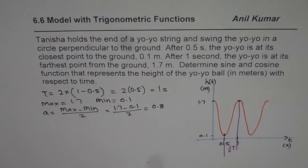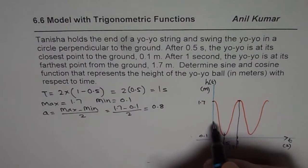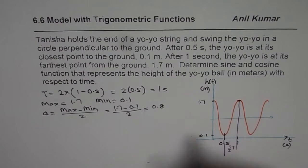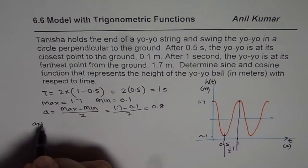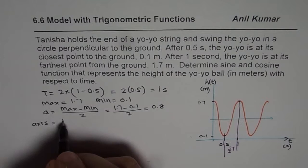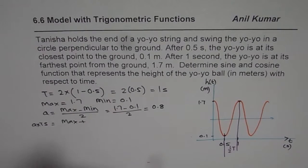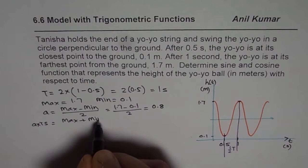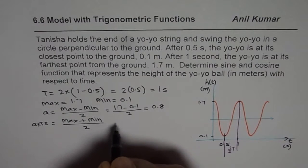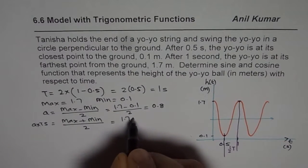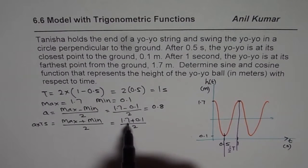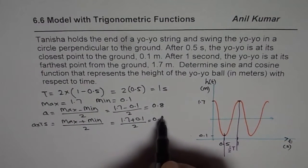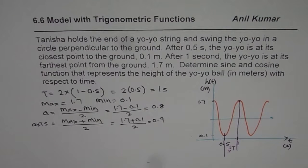As far as the axis is concerned, axis will be average value. So we have axis as equals to maximum plus minimum divided by 2, which in this case will be 1.7 plus 0.1 divided by 2 or 1.8 divided by 2 gives us 0.9. So that is the axis.